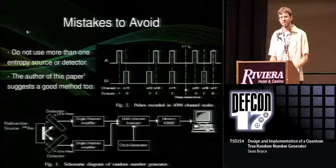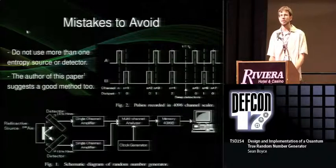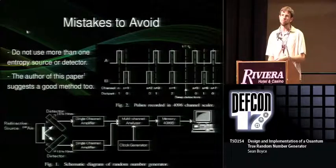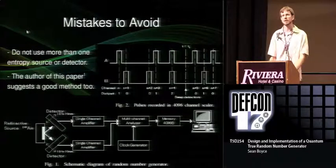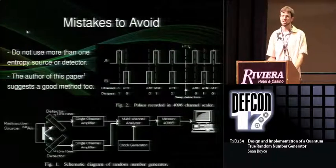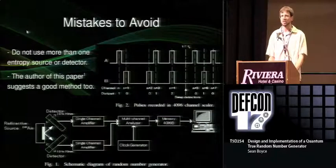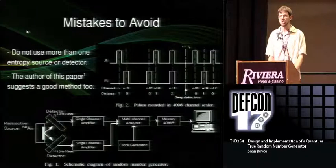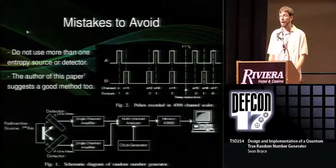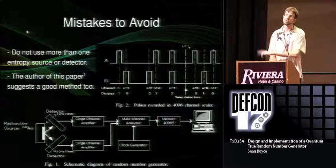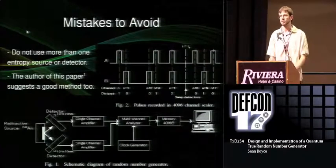The first most tempting mistake is to use more than one detector for your entropy source and have one detector output zeros and the other output ones. On paper this is nice, but in practice the detection efficiency of your detectors and where they are located relative to the source will make one of them more likely to detect things than the other. So you will have some sort of bias involved.